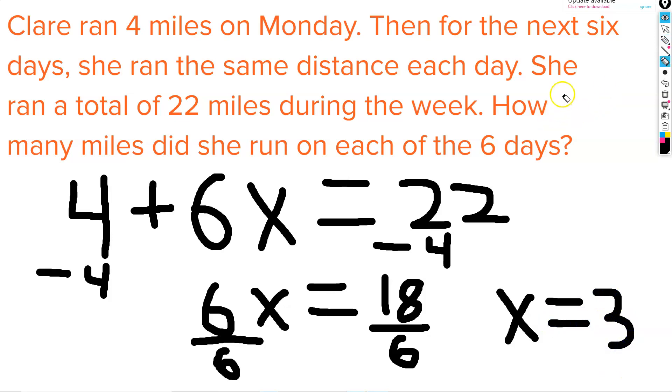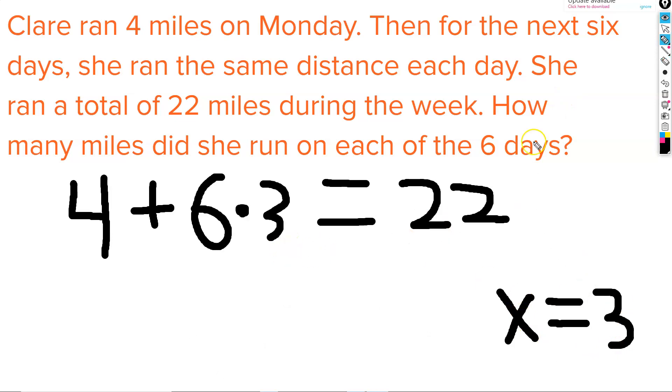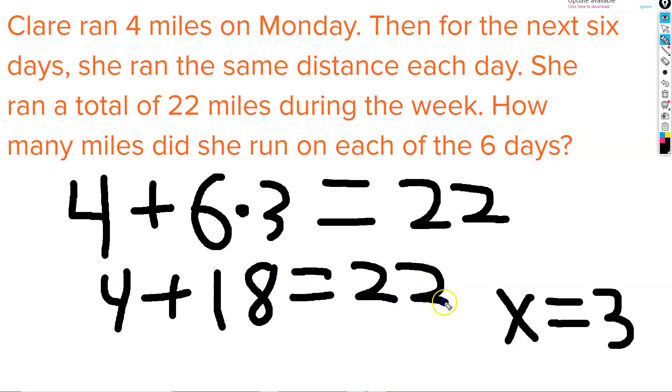We can check our solution by substituting this 3 in for x in our original equation. First, we do 6 times 3, and that equals 18, and then 4 plus 18 equals 22, which means that our solution was correct. Our x value equaling 3 tells us that Claire ran 3 miles for the next 6 days.